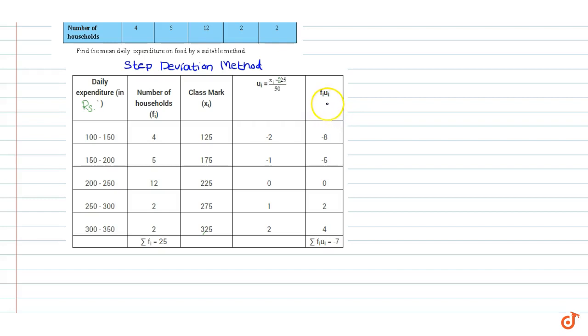In this column we calculate fi into ui. We multiply frequency fi by ui. Here fi is equal to 4 and ui is equal to minus 2. So we multiply both the quantities and we get minus 8.